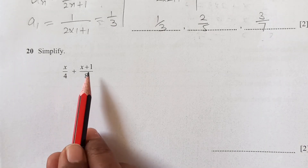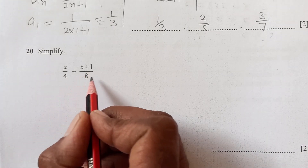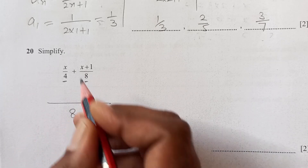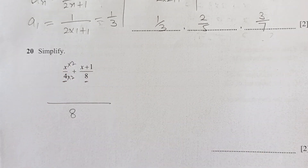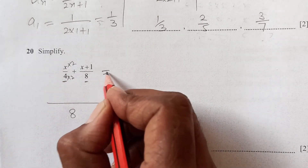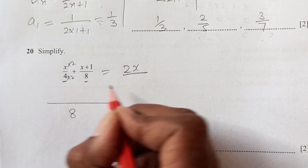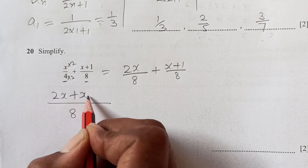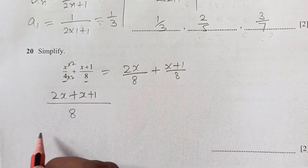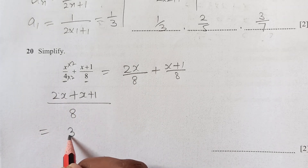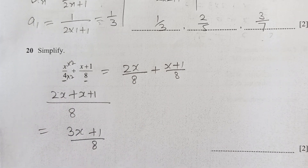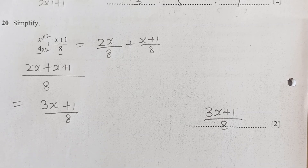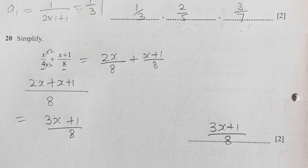Simplify x/4 + (x+1)/8. Make denominators equal (LCD = 8): multiply x/4 by 2/2 to get 2x/8. Then 2x/8 + (x+1)/8 = (2x + x + 1)/8 = (3x + 1)/8.